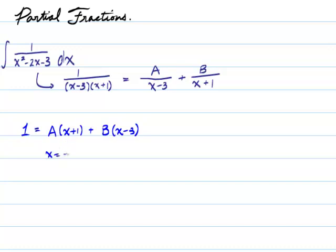Then what this reduces to is that the a term disappears, and you just end up with 1 is equal to b times minus 1 minus 3. And therefore, b is equal to 1 over negative 4.